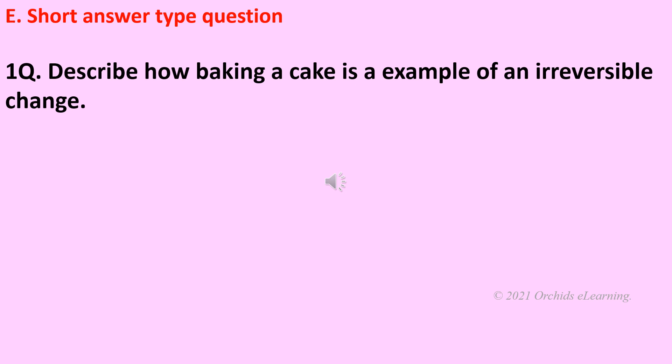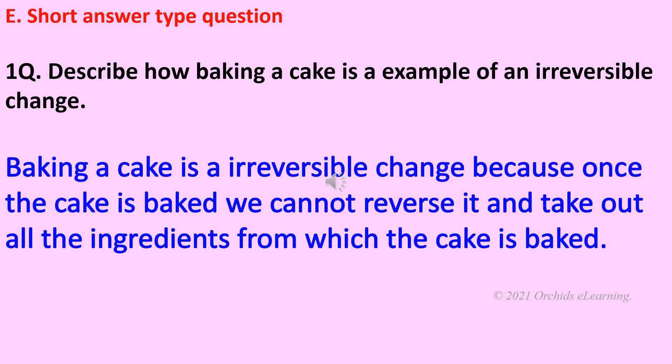Short answer type question: Describe how baking a cake is an example of an irreversible change. Baking a cake is an irreversible change because once the cake is baked, we cannot reverse it and take out all the ingredients from which the cake was baked.